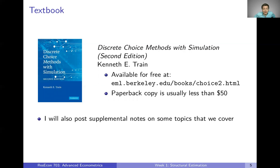For this class, we're going to use Ken Train's Discrete Choice Methods with Simulation as our textbook — in particular the second edition, which has some nice updates from the first. This is a great book, very readable for an econometrics book. It's also great because it's available for free; you can get an electronic copy on Ken's website. If you like having the actual physical book, you can usually find it for less than 50 bucks — sometimes around 35 to 45 dollars.